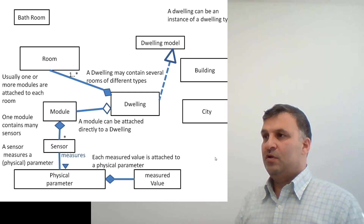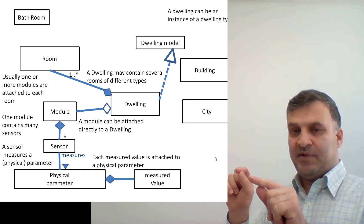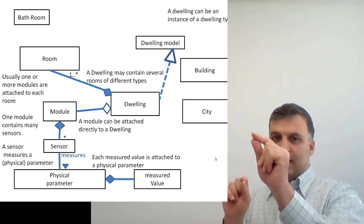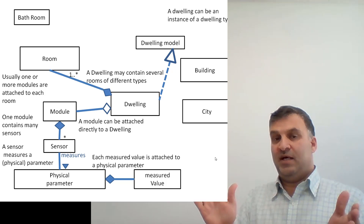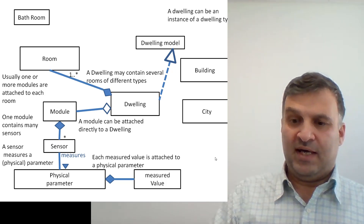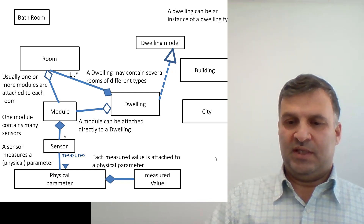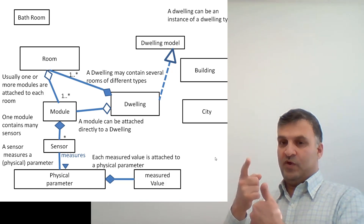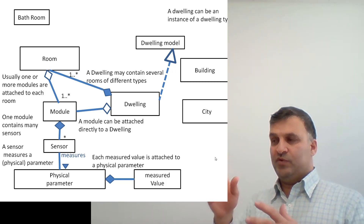Usually, one or more modules are attached to each room. It is the same relationship as between module and dwelling, but now we put the module in one piece of the house. This is the best representation because we can also move the module, so we can use association here. We can say one or more, so we put 1..*. If the maximum number is 10, we can put 10, etc.